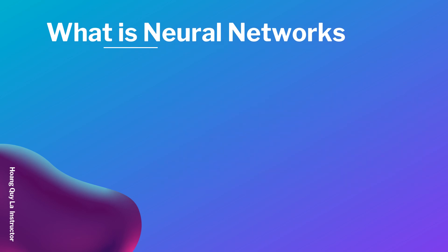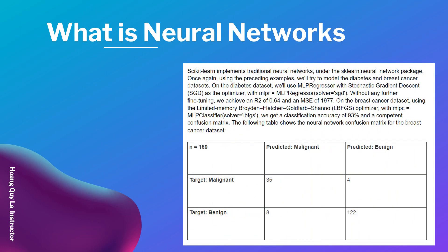Scikit-learn implements traditional neural networks under the sklearn.neural_network package. Using the examples above, we try to model the diabetes and breast cancer datasets. On the diabetes dataset, we use the MLP Regressor with stochastic gradient descent (SGD) as the optimizer, setting mlpr equal to MLPRegressor with solver equal to 'sgd'.